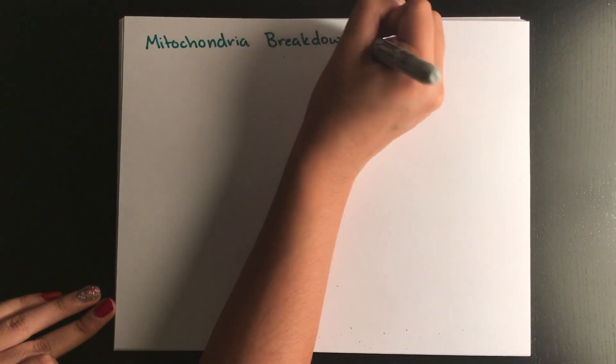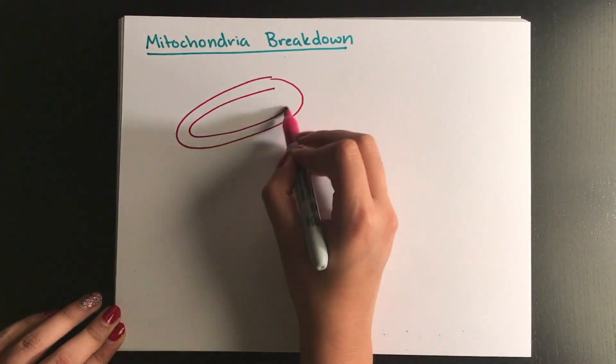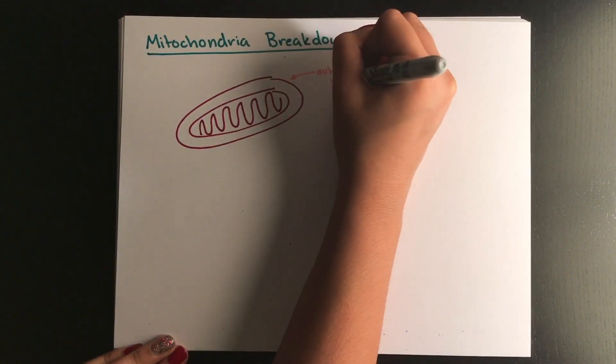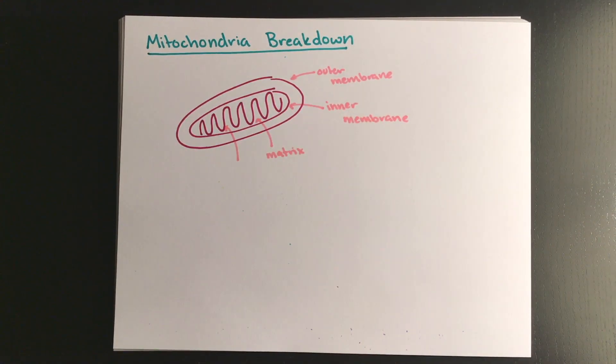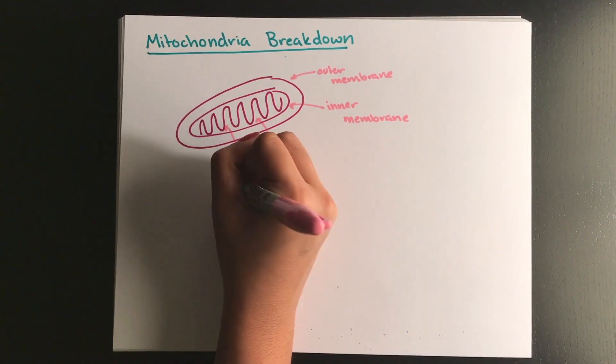Really quickly for those who are unfamiliar with mitochondria or need a refresher, it is a double-membraned organelle with an inner and an outer membrane. Within the inner membrane are folds called cristae and the space within the inner membrane is known as the matrix.